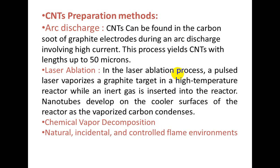The second method of preparation of CNTs is laser ablation. In this process, a pulsed laser vaporizes a graphite target in a high-temperature reactor while an inert gas is inserted into the reactor. Nanotubes develop on the cooler surface of the reactor as the vaporized carbon condenses. Other important methods include chemical vapor decomposition, natural, incidental, and controlled flame environments.